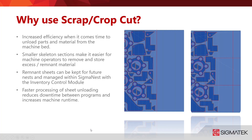We'll go over why we want to use a scrap or a crop cut and then we'll also go into the difference between the two. One of the first reasons you'll want to use a scrap or a crop cut function is the increased efficiency when it comes to time to unload parts and material from the machine bed. These processes make it a lot easier not only for your operators but also for post unload as well.